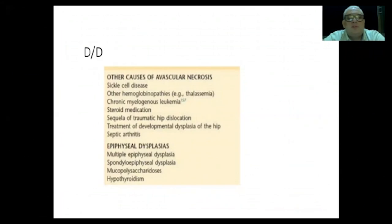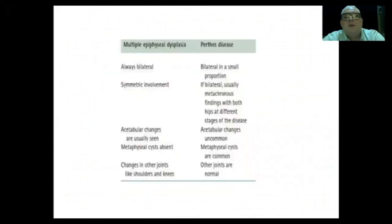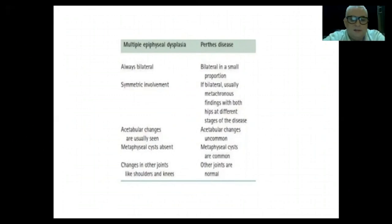Other causes of avascular necrosis include sickle cell disease, hemoglobinopathies, steroid injections, sequela of traumatic hip dislocation, treatment of developmental dysplasia of the hip, septic arthritis, and epiphyseal dysplasias such as multiple epiphyseal dysplasia, spondyloepiphyseal dysplasia, mucopolysaccharidosis, and hypothyroidism. Multiple epiphyseal dysplasia is bilateral and symmetrical, whereas Perthes disease, even if bilateral, is asymmetric — starting on one side then the other. Multiple epiphyseal dysplasia is not painful and affects other physes, while Perthes does not.